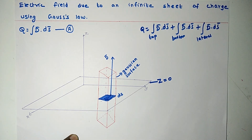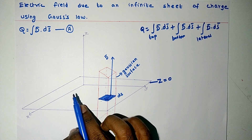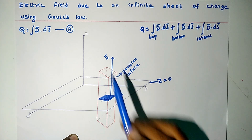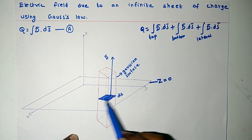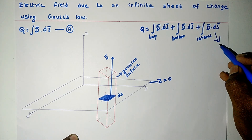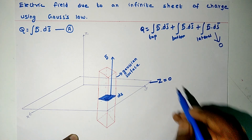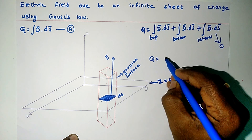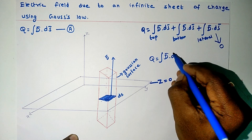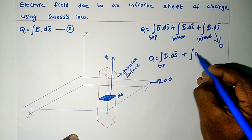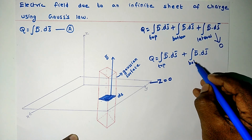An important property of electric flux is that it always leaves the surface normally. So if this is the infinite sheet of charge, the flux leaves the surface normally and will not cross the sides. So we can say that the flux crossing the lateral sides will be zero. Therefore Q will be equal to the integral of D vector dot ds vector over the top, plus the integral of D vector dot ds vector over the bottom.